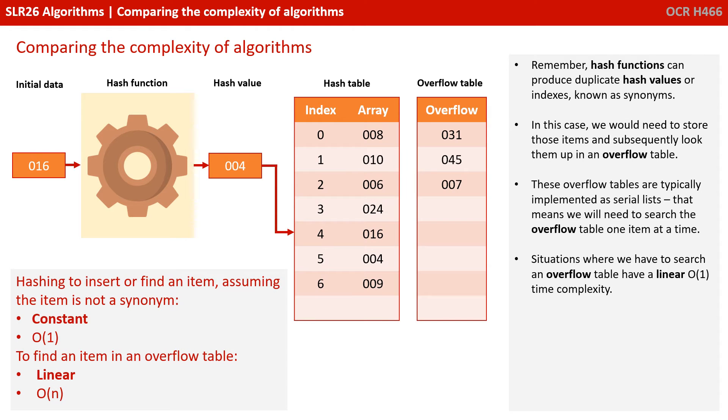Of course, remember from our previous videos that hash functions can produce duplicate hash values or indexes, known as synonyms. In this case, we would need to store those items and subsequently look them up in an overflow table. These overflow tables are typically implemented as serial lists, although there are other methods, and that means we'd need to search the overflow table one item at a time. So for situations where we have to search an overflow table, we now have linear or O(n) time complexity.